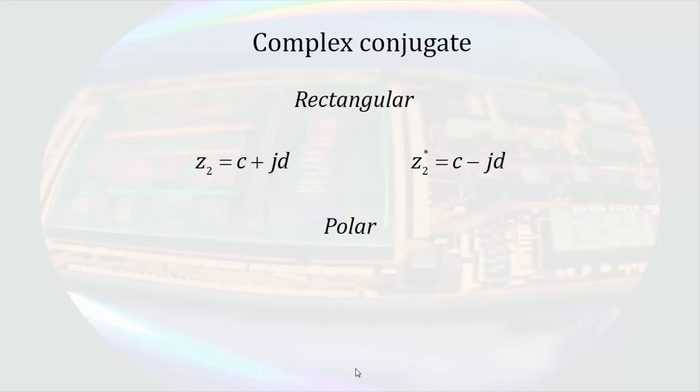In polar form, the complex conjugate, again denoted by z asterisk of a number, will be taken by changing the sign of the angle or the exponent. These two operations are identical. If you do the conversion from rectangular to polar form, you'll see that changing the sign of the imaginary component is the same as changing the sign of the angle.